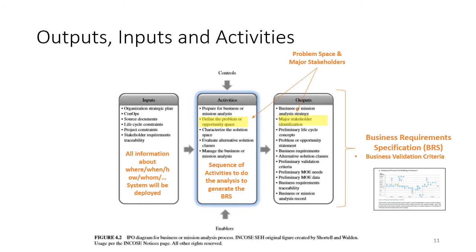Starting on the right-hand side with the business requirements specification — this is the document that summarizes everything learned in the analysis of the business or mission. It is a written document that can of course include figures, diagrams, and SysML models, but it is fundamentally a written narrative with lots of process maps and diagrams. The activities listed in the handbook are a sequence: prepare, define the problem or opportunity space, characterize the solution, evaluate alternative solution classes — not solutions, but classes of solutions — and then manage the process.